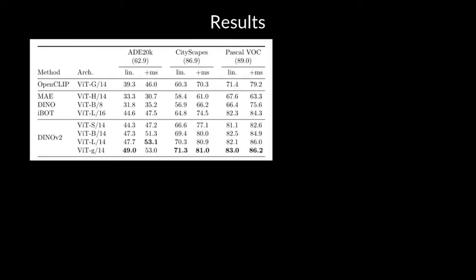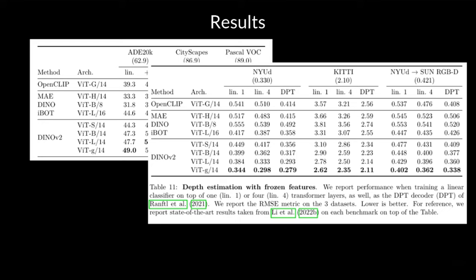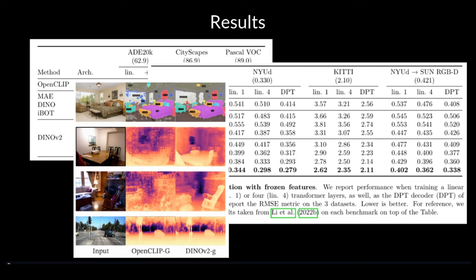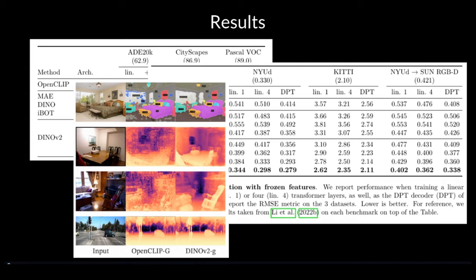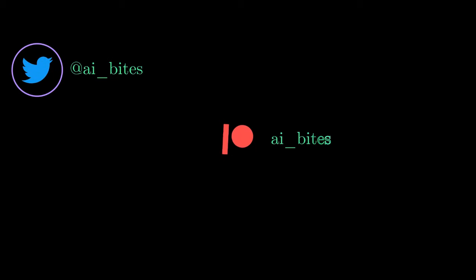With all these improvements, the results look impressive — DINOv2 performs better than iBot in segmentation on every single dataset. When it comes to depth estimation, it once again outperforms iBot on common datasets like KITTI and NYUD. There are also qualitative outputs for segmentation and depth estimation, and they all indicate very good performance. So that was DINOv2 — I hope you enjoyed and got some value out of it. I'll see you in my next video.